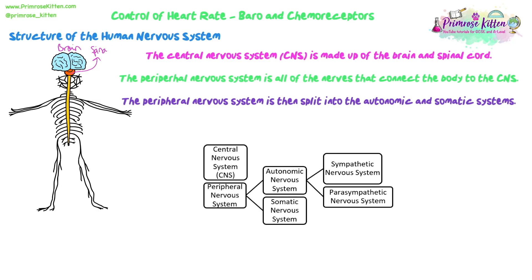First of all, we need a little bit of a recap of the structure of the human nervous system, because we don't really go into this much detail at GCSE and we need to know all of these names. The main part you will be familiar with from GCSE is the central nervous system, the CNS. That's made up of the brain and the spinal cord. And then you have all of your nerves — the neurons are bundled up into nerve fibers. This is your peripheral nervous system, so that's all of the nerves that connect all of the cells in your body to the brain and spinal cord.